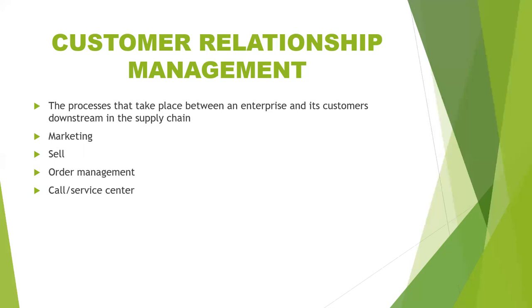So once the product has been marketed, sold, and the orders have been managed, the next most important category is the service center. For each and every product, customers need warranty and guarantee. If they face any difficulty in using the product, they need the service center. How well you provide your service center and how well you stay connected with your customers even after post-delivery of the product is very important. These are the four important processes which deal with Customer Relationship Management.